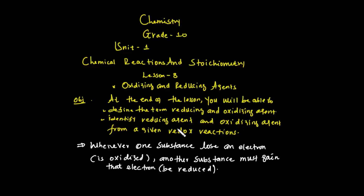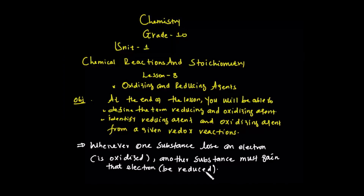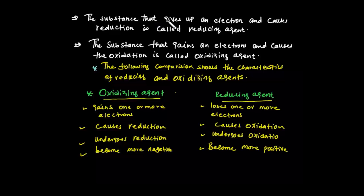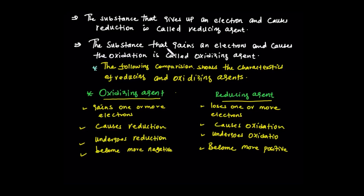Whenever one substance loses an electron, that means it is oxidized. Another substance must gain that electron and be reduced. Oxidation and reduction occur simultaneously. The substance that gives up electrons and causes reduction is called the reducing agent. The substance that gains electrons and causes oxidation is called the oxidizing agent.